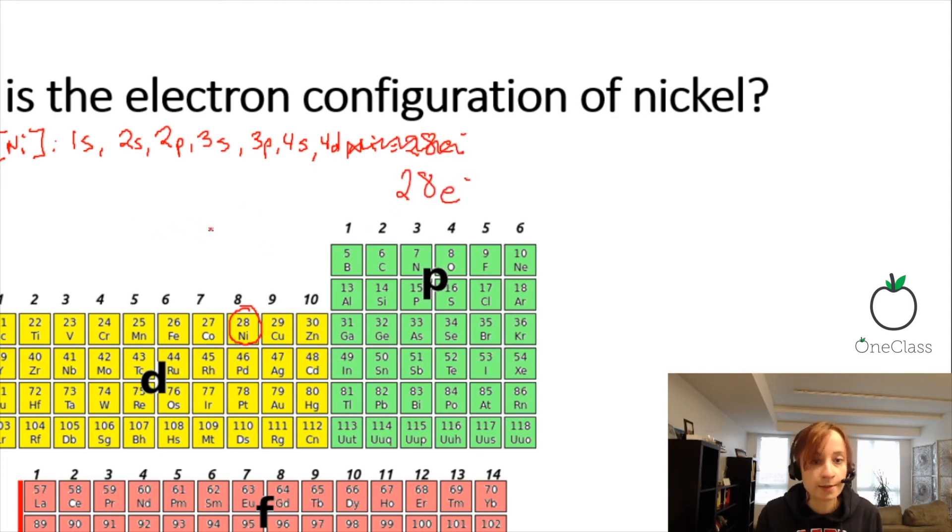Now we have all the subshells figured out. Now we just need to place in the 28 electrons. The S orbital can hold 2 electrons, P can hold 6, D can hold 10, and no more.